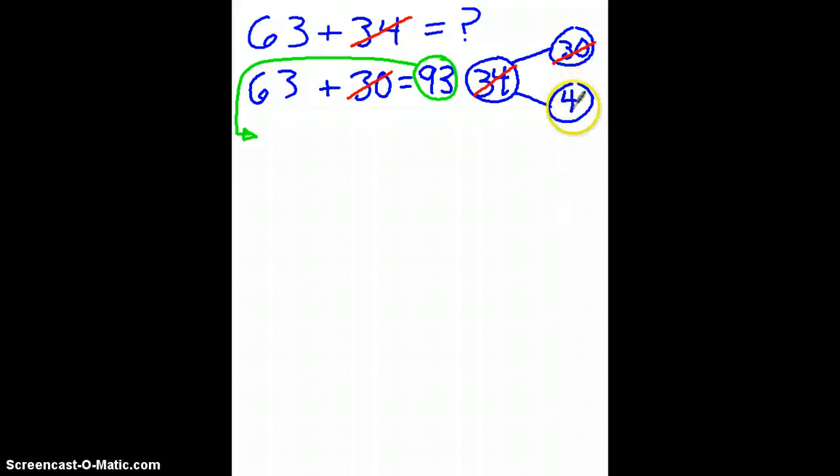I still need to add 4 to 63 as well, if I want to know what 63 plus 34 is. So, I'll take the sum that I've gotten so far, 93. And to that sum, I'm going to add 4, the other part of the number bond.